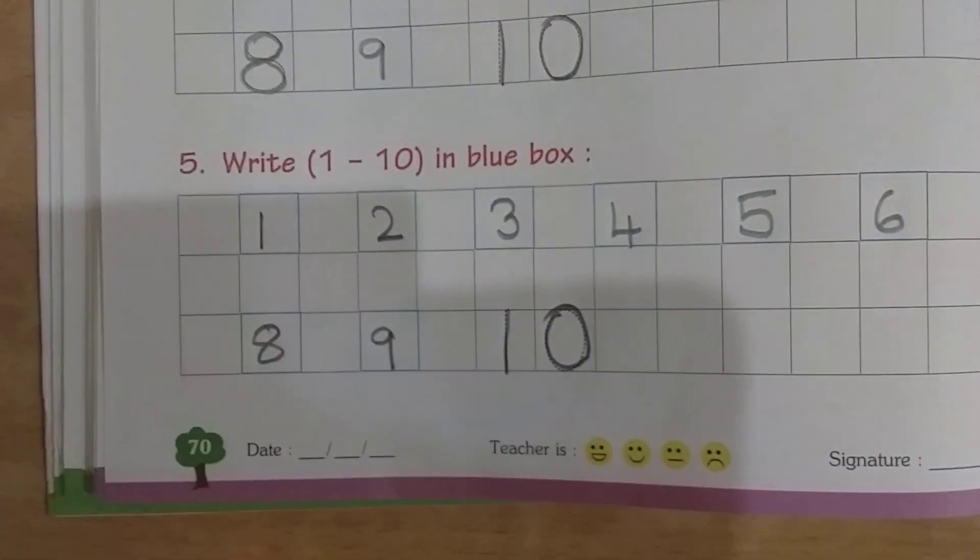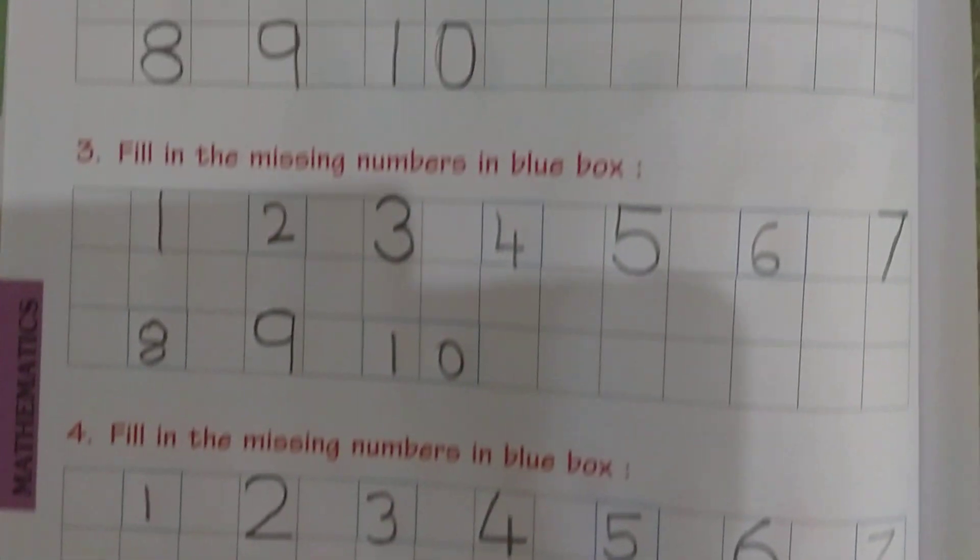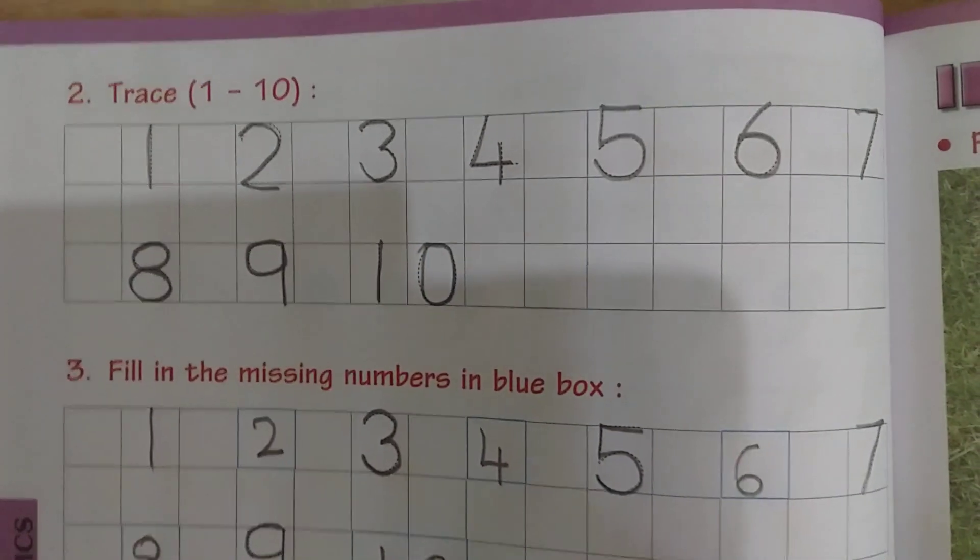See, now I came to know that 1 to 10, before numbers, after numbers and full 1 to 10. Okay kids, understood?